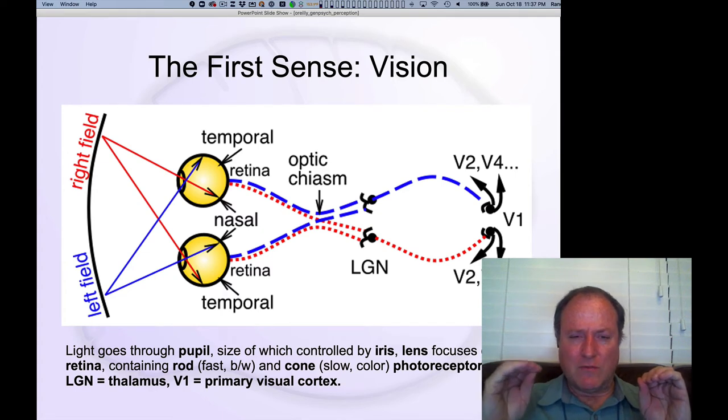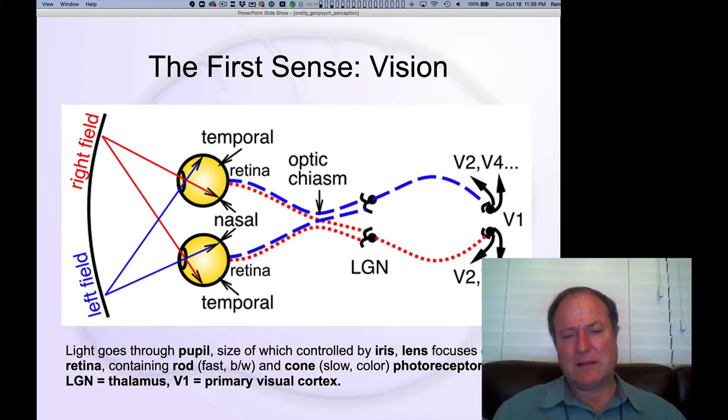They then go back into this pathway into the lateral geniculate nucleus (LGN) of the thalamus, and on their way you get this critical remixing so that your left visual field, which comes in through the two different eyes, gets remixed and separated.